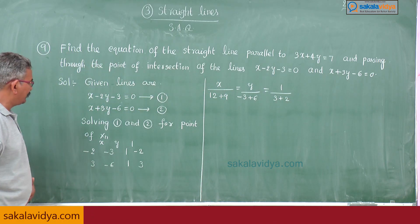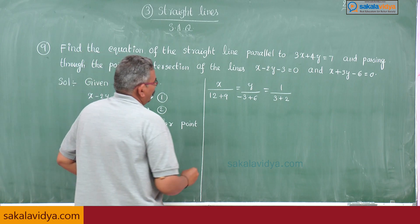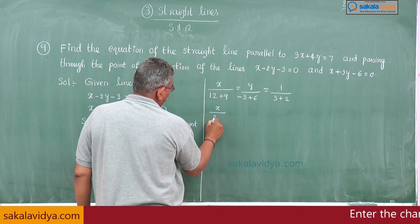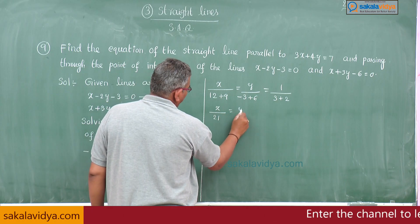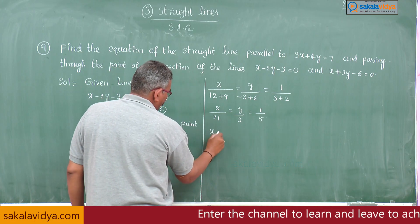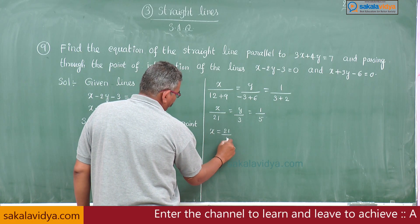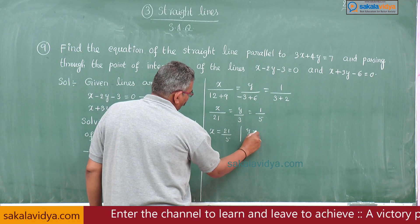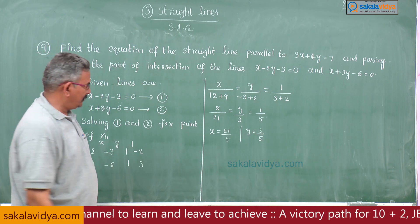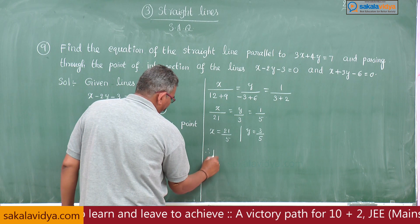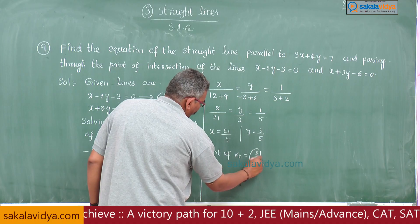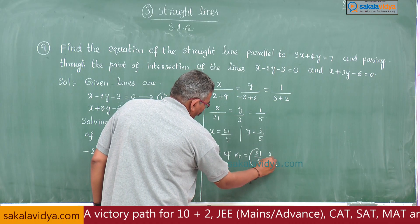So x divided by 12 plus 9, y divided by minus 3 plus 6, 1 divided by 3 plus 2. Therefore x is equal to 21 by 5, y is equal to 3 by 5. The point of intersection is (21/5, 3/5).